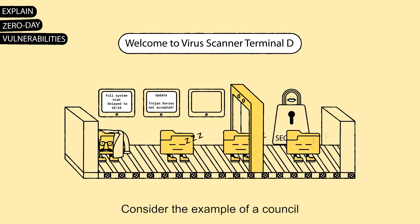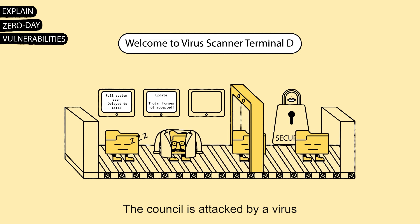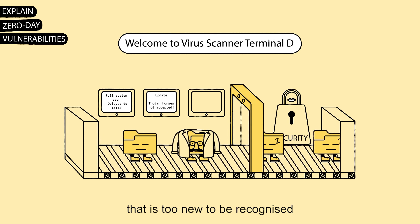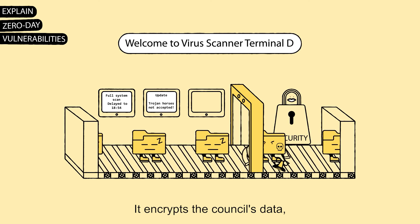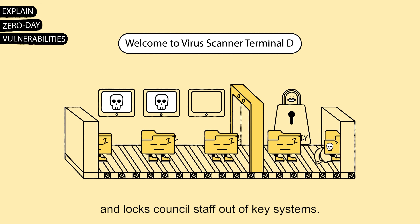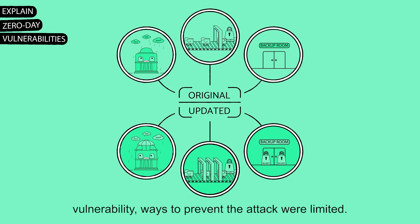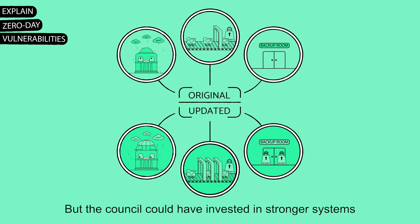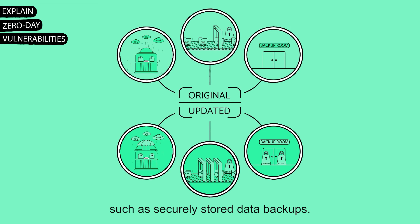Consider the example of a council that has fallen victim to such an attack. The council is attacked by a virus that is too new to be recognised by the council's antivirus software. It encrypts the council's data and locks council staff out of key systems. The council's review states that as a zero-day vulnerability, ways to prevent the attack were limited. But the council could have invested in stronger systems and processes to mitigate the consequences, such as securely stored data backups.